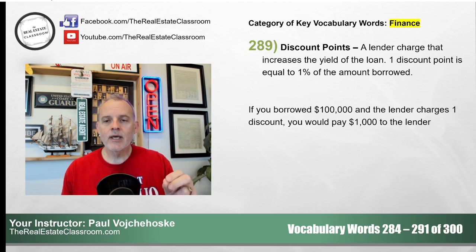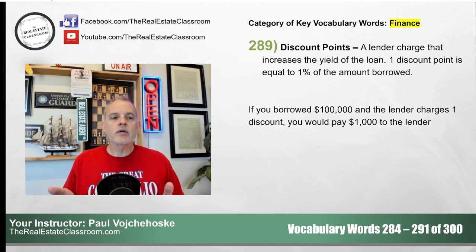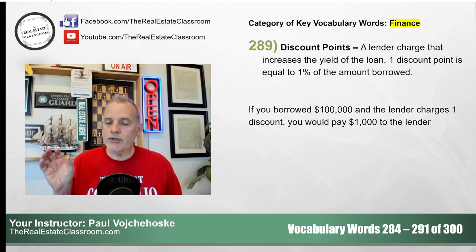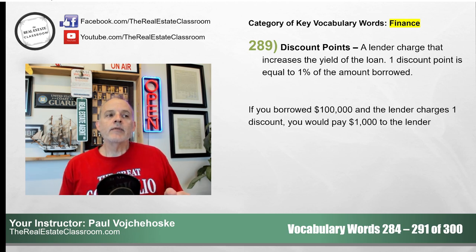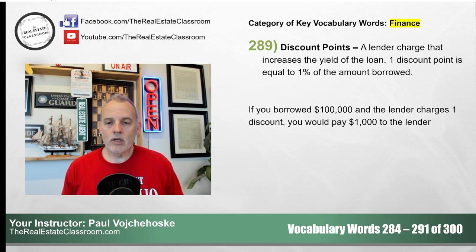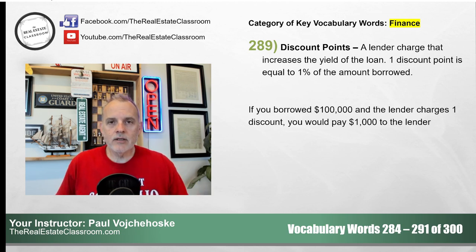So a discount point — one discount point — very important: one discount point is equal to 1% of the amount borrowed. I guarantee in some form, you're going to have a discount point math problem on your exam. So if you borrow $100,000 from the bank — note that's different from the purchase price — let's say the purchase price is $120,000, you put $20,000 down, and you borrow $100,000. If the bank charges one discount point on that $100,000 loan, you're going to pay $1,000. It's 1% of the amount borrowed — not the purchase price or value of the property, but the amount you're borrowing. That trips up so many students and they end up missing that math problem on their exam.